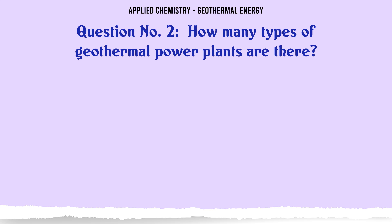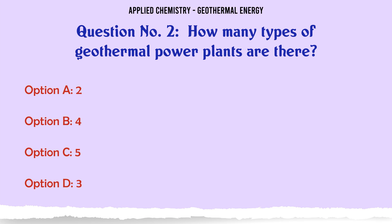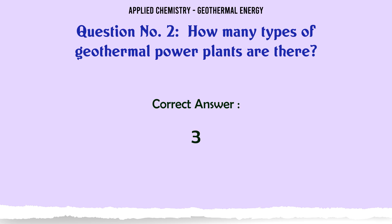How many types of geothermal power plants are there? A: 2, B: 4, C: 5, D: 3. The correct answer is 3.